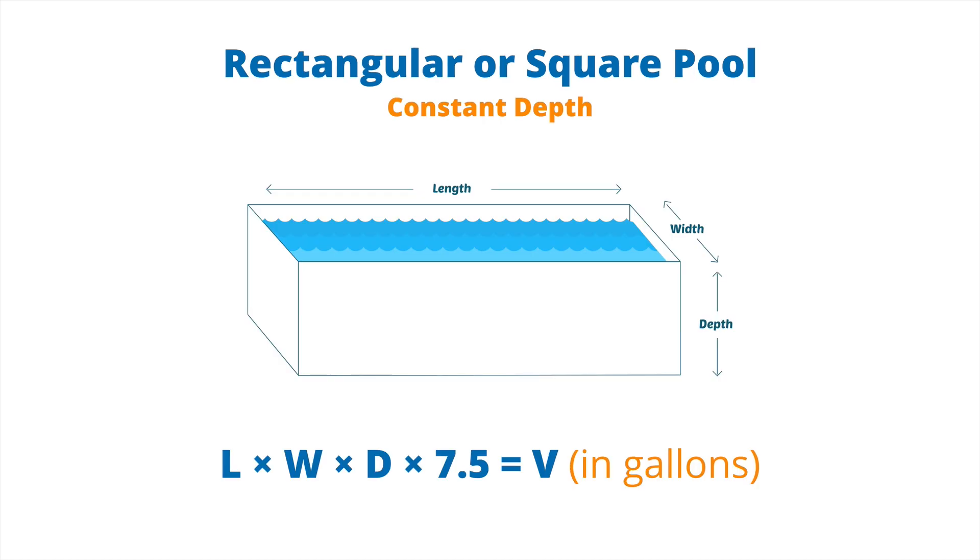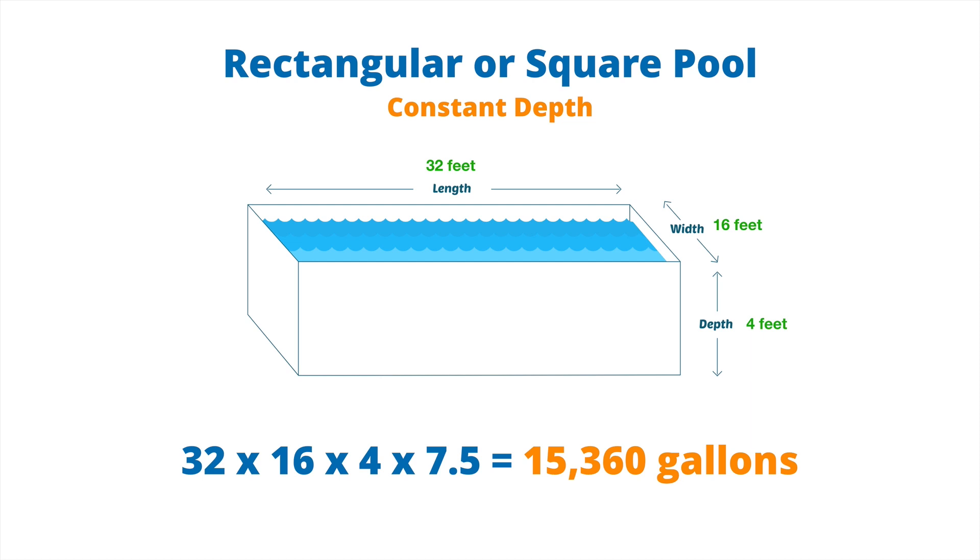Let's move on to the rectangular or square pool with a constant depth. This is just a box, right? So we need to know the length, the width, and the depth. We take the length times width times depth times 7.5, which is the amount of gallons in a cubic foot. Let's take an example of a 16 by 32 pool with a constant depth of four feet. So we take 32 times 16 times 4 times 7.5, which gives us 15,360 gallons.